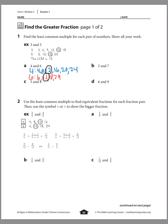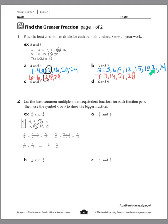Let's do the same thing with 3 and 7. Listing out the multiples of 3: 3, 6, 9, 12, 15, 18, 21, 24. And for 7: 7, 14, 21, 28. We'll stop there. Do we see a multiple they have in common? Yes — 21. Any others? No. So 21 is our least common multiple.